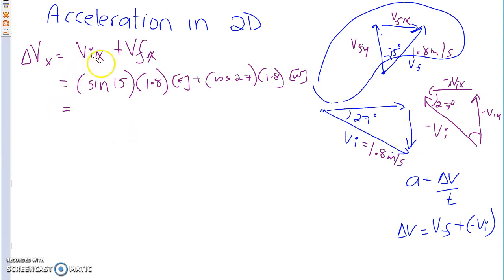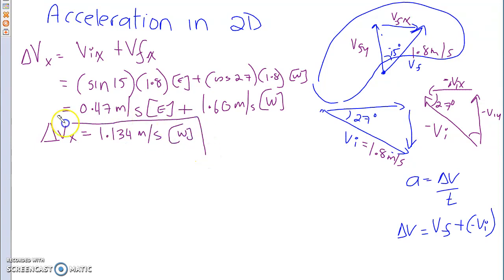Now you end up getting the following numbers, 0.47 meters per second going east, plus 1.60 meters per second going west. And you end up with getting a delta VX, which is 1.134 meters per second going west. And the reason being, of course, because our west component is larger than our east component, so we're gonna subtract the two.